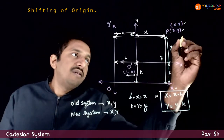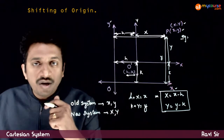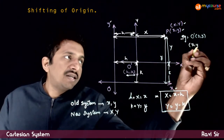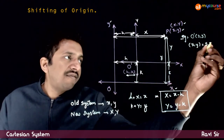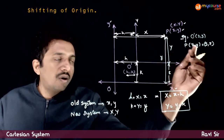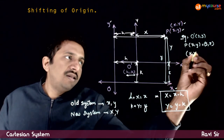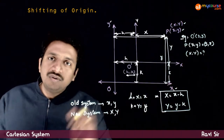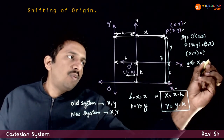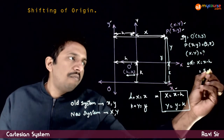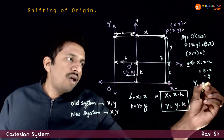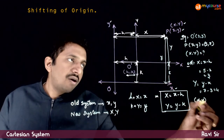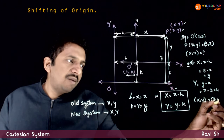Let's take a simple example. If the origin has been shifted to the point 2 comma 3, find the new coordinates of the point whose original coordinates are 5 comma 7. You just need to use the formula: capital X equals small x minus h, which is 5 minus 2, equal to 3. And capital Y equals small y minus k, which is 7 minus 3, equal to 4. So the new coordinates of the point 5 comma 7 are 3 comma 4. As simple as this.